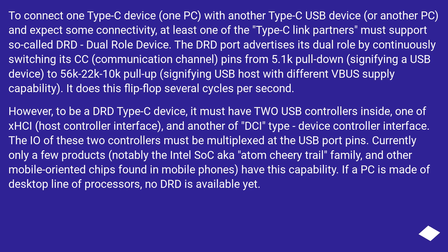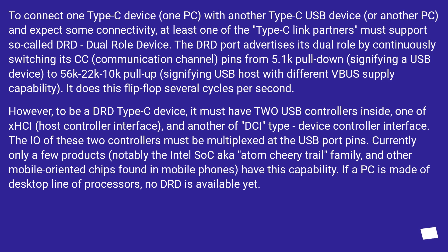The DRD port advertises its dual-role by continuously switching its CC communication channel pins from a 5.1K pull-down, signifying a USB device, to a 56K/22K/10K pull-up, signifying a USB host with different power supply capability. It does this flip-flop several cycles per second. To be a DRD Type-C device, it must have two USB controllers inside — one of type host controller interface and another of type device controller interface — and the I/O of these two controllers must be multiplexed at the USB port pins.